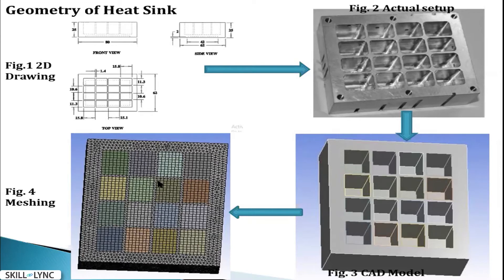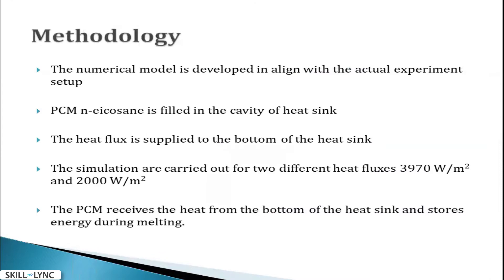The numerical model is developed in line with the actual experimental setup. The phase change material used is eicosane, which fully fills the cavity. The most common organic PCM example is paraffin wax. The heat flux is supplied at the bottom of the heat sink. The study is performed for two heat fluxes: 3970 W/m² and 2000 W/m². Heat is conducted from the bottom to the PCM through conjugate heat transfer.